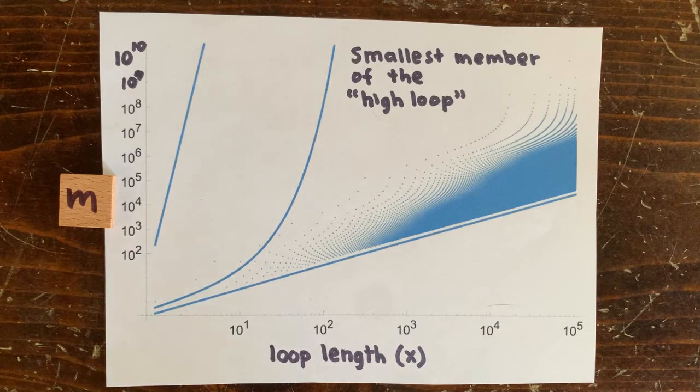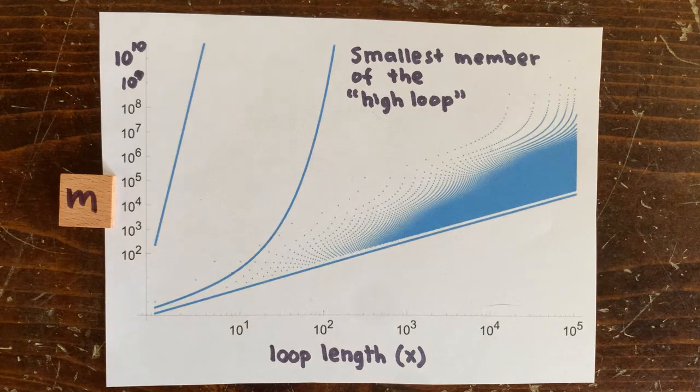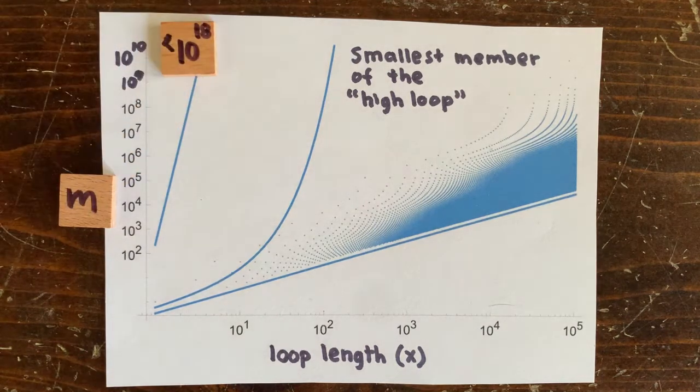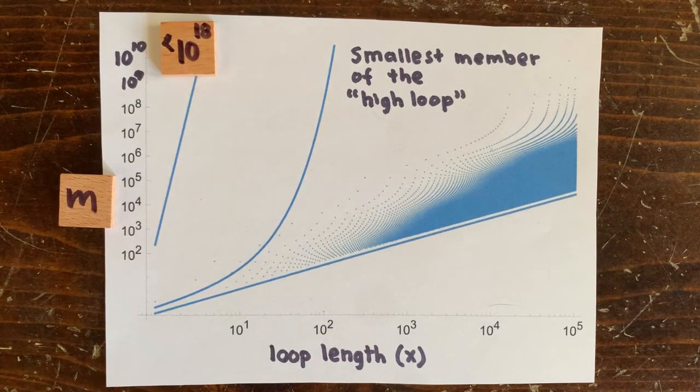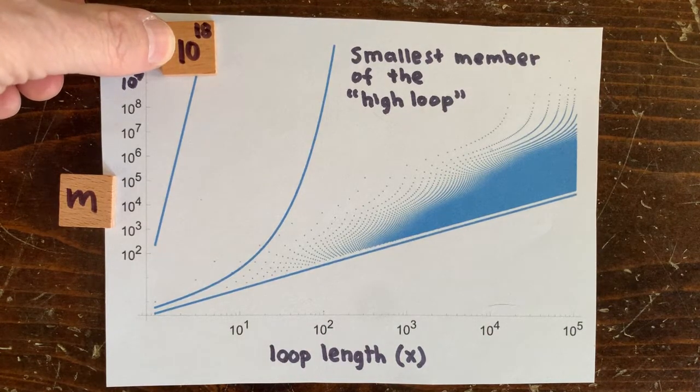Because the bottom of that loop around 10 to the 10th, we know that number goes to 1. So we're looking for a loop whose members are all bigger than a billion billion or 10 to the 18th.